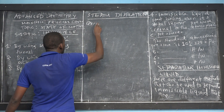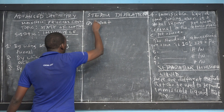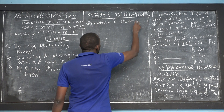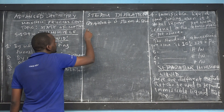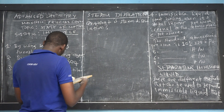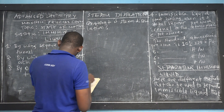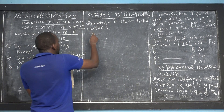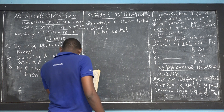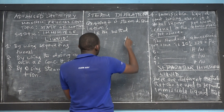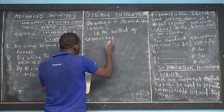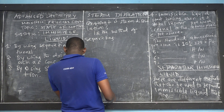The first question we have to answer is: what is steam distillation? What does it mean? You can find different definitions, but here is one I want to share. Steam distillation is a method — specifically, the method of separating an immiscible liquid mixture.